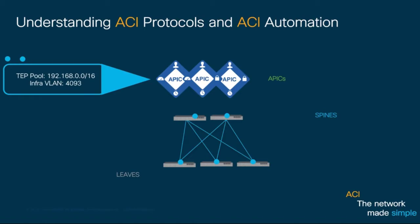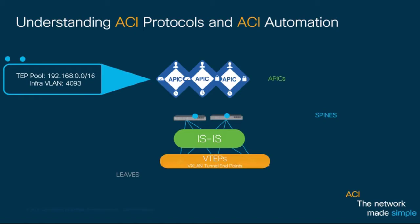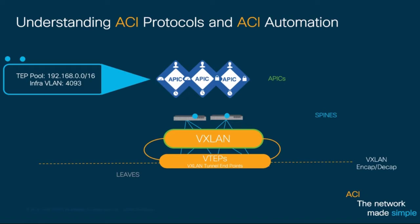Once APIC assigns an IP address to each leaf or spine, it will also configure ISIS as our underlay routed protocol. This will allow us to have full connectivity between all leaves, which will function as VTEPs or VXLAN tunnel endpoints. VTEPs' main function is to encapsulate incoming traffic with a VXLAN header and then decapsulate outgoing traffic to deliver it in its original format. This way we have Layer 2 extended from any leaf to any leaf automatically with no spanning tree and using all links between leaves and spines in active-active mode.